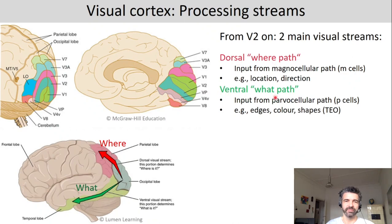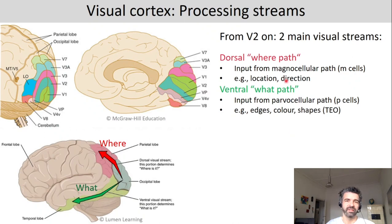Dorsal pathways get input from M cells and ventral more from P cells — so from midget and parasol bipolar cells in the retina to LGN cells of different layers. In V1 there is distinct processing of where and what. The dorsal path is responsible for location and direction, and the ventral path — the 'what' path — is responsible for edges, color, and shapes.